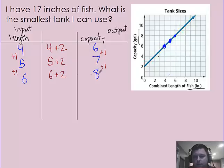So if I want to find 17 inches of fish, I'm going to take this pattern and go down to 17. So the next one's going to be 17 plus two. And that's going to be 19 gallons. So the smallest tank I can have is 19 gallons.